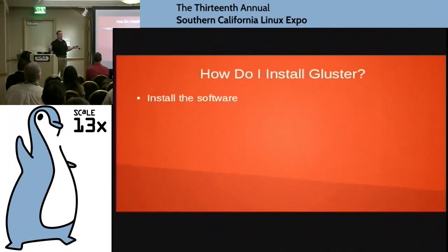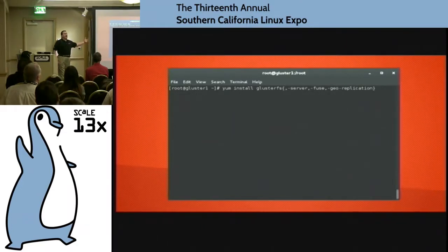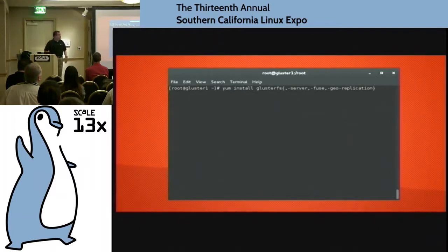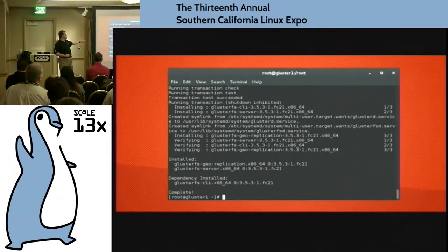Now that we've got all our file systems laid out, we want to install some software. It's actually really straightforward. The command is: yum install glusterfs-server glusterfs-fuse glusterfs-georeplication. That will drag in all the other stuff you need — the RPM dependencies will pull that in. If you're on Debian, you'll use apt-get. Just use your package management system. I used Fedora, but this is available across all the distros. The installation drags in all the dependencies — glusterfs-server, glusterfs CLI, georeplication package, all that good stuff.